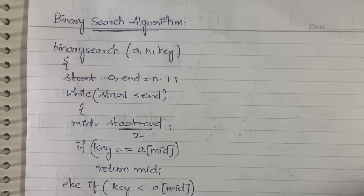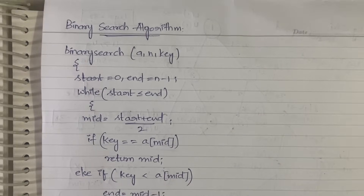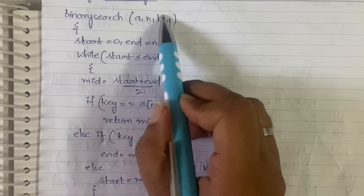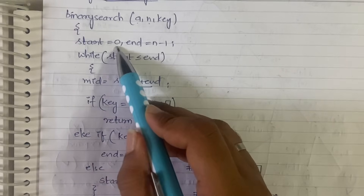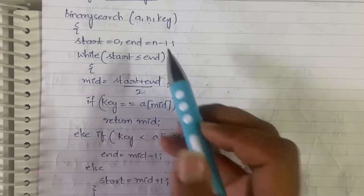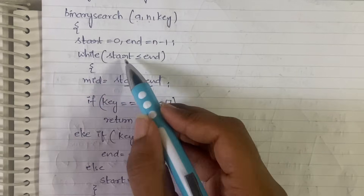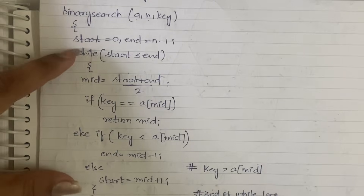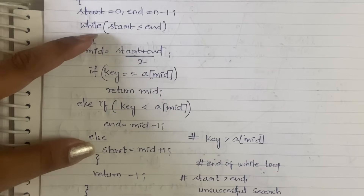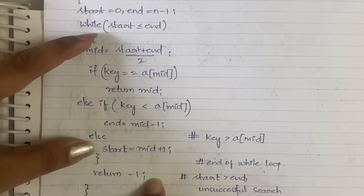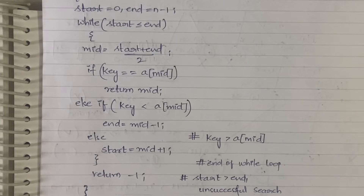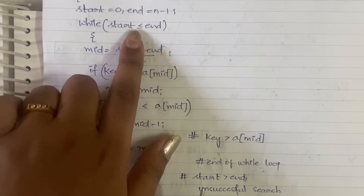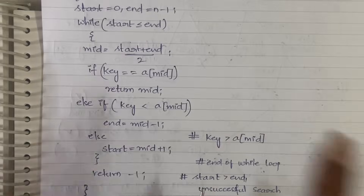Let me explain the binary search algorithm. The function is binary search of a, n, and key — where a is the array, n is the number of elements, and key is the element you are trying to search for. You take start as 0 and end as n minus 1, which is the last position. While start is less than or equal to end, you go into the loop; otherwise you return minus 1, meaning unsuccessful search.